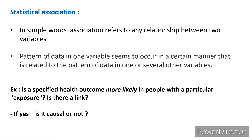Statistical association: in simple words, association refers to any relationship between two variables where a pattern of data in one variable seems to occur in a certain manner related to the pattern of data in one or several other variables. A simple example: is a specified health outcome more likely in people with a particular exposure? Is there any link, and if yes, is it causal or not?